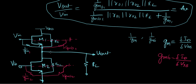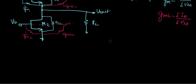Now see at the branch where the output is being taken — what resistances are connected? We have gm1, 1/gmb1, RL, and ro2. But we do not have 1/gmb2 or 1/gm2. Do you see that? They're not connected to this branch — they're connected from the source to the gate of the second transistor and from the source to the bulk of the second transistor, but not at the output node.